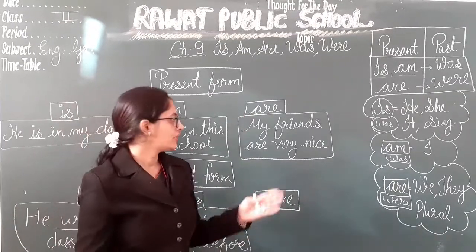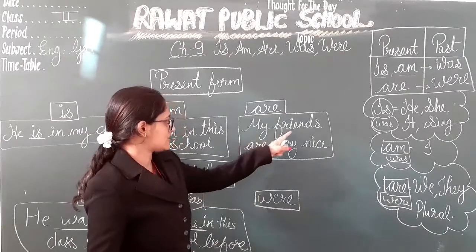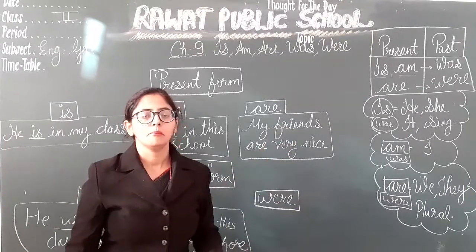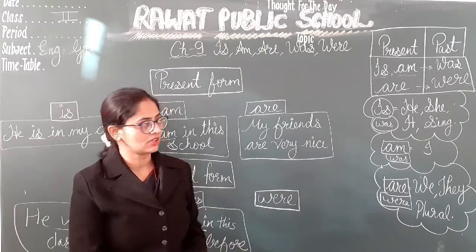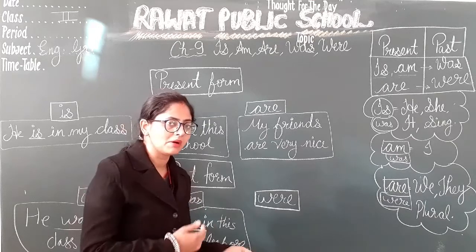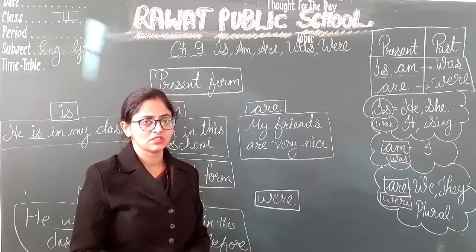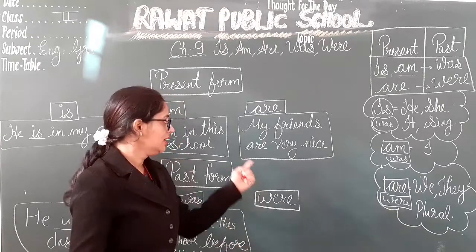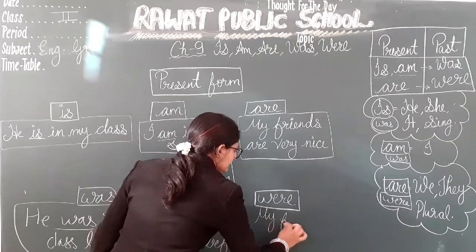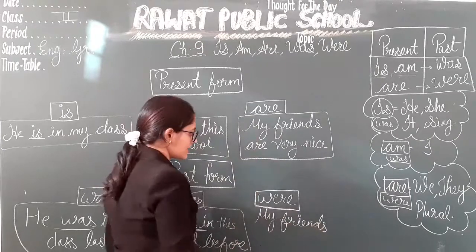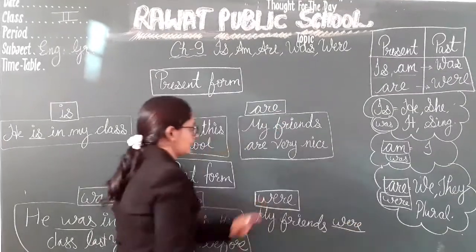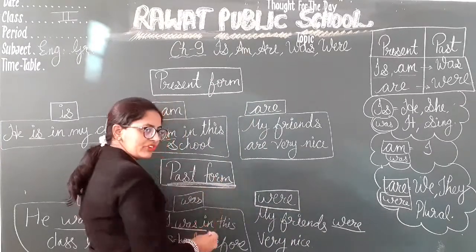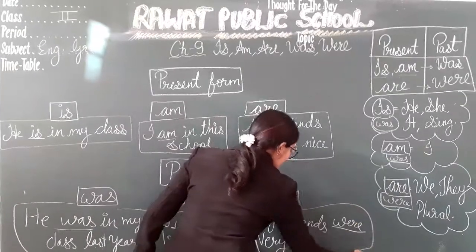Now the third example uses are. We use are with the plural. For example, my friends — friends is more than one. So we say: My friends are very nice. That is the present form. For the past form, the past of are is were. So we write: My friends were very nice. Because we are talking about the past, we use were.